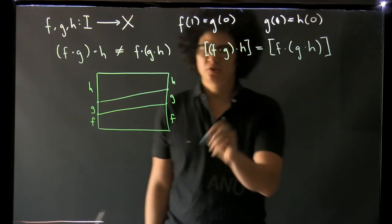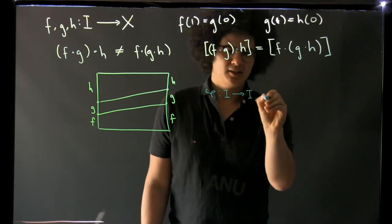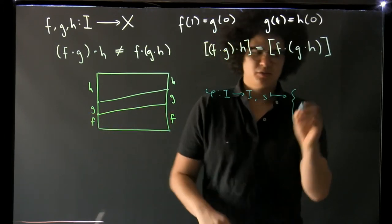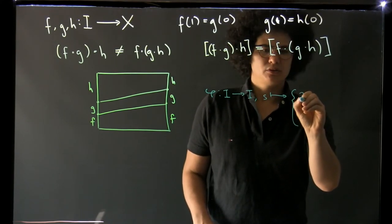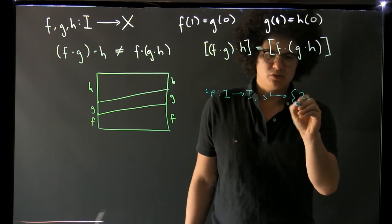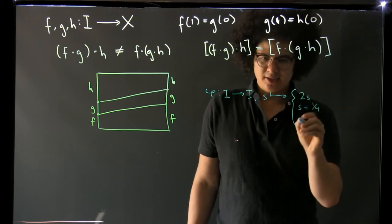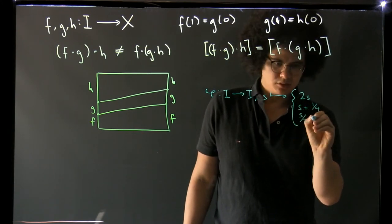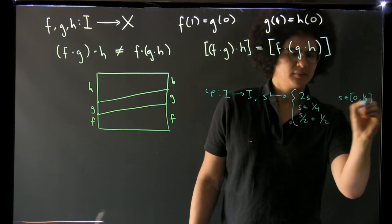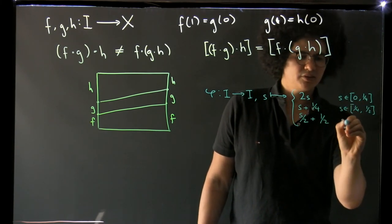So the reparametrization we want to get this homotopy is a map from the interval to itself and you want to send a point in the interval to - on this part we want to start going slower so we want to go to 2s, and then on this part we want to stay fixed along this so we want to go to s plus a quarter, and on the last part we want to go slower so we want to go to s on two plus one on two. So this is for s in the first quarter, this is for s in the second quarter, and this is for s in the last half.